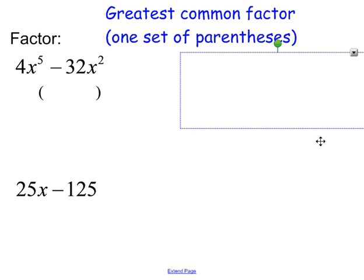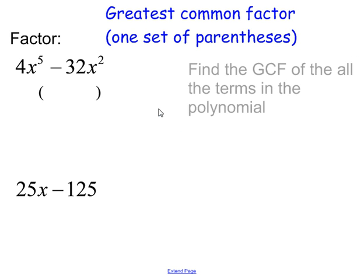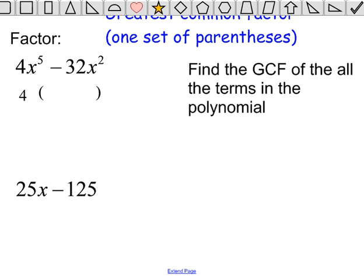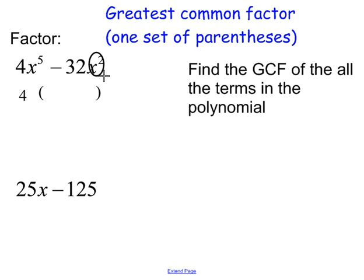The next step is to find the greatest common factor of all the terms in the polynomial. The greatest common factor of 4 and 32 is 4, so 4 is going to go outside of the parentheses. When all the terms have a variable, factor out the variable with the lowest exponent. The variable with the lowest exponent here is x squared, so you want to factor out x squared. Only factor out a variable if all the terms have a variable.